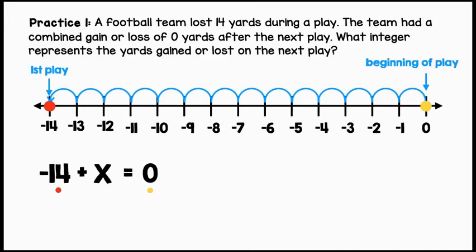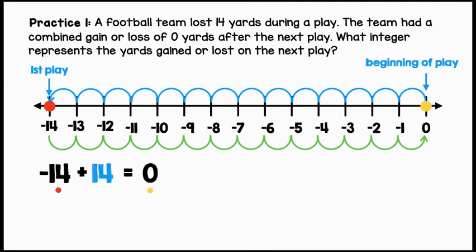That way we have a combination of zero yards at the end. So in order to get back to zero, we're going to move to the right. Let's count how many spaces. We can see that that will be a gain of 14 yards.